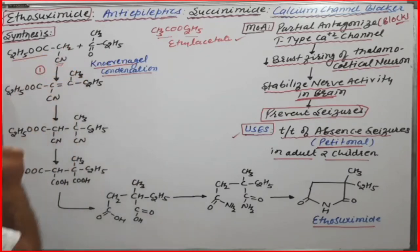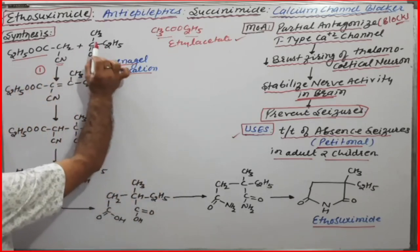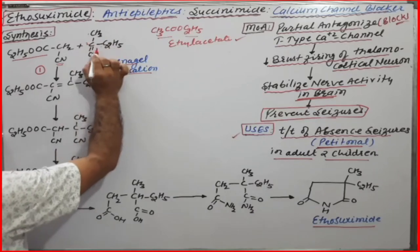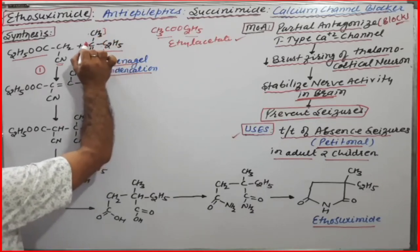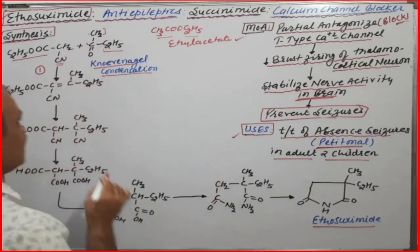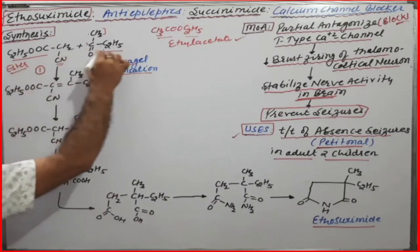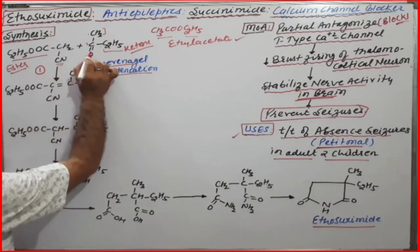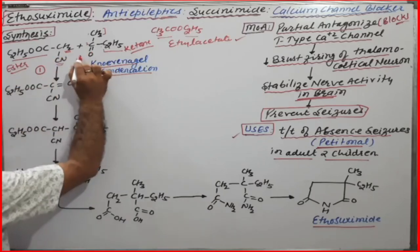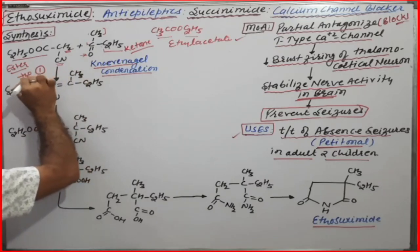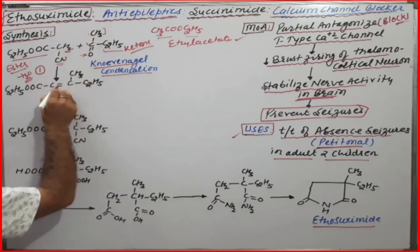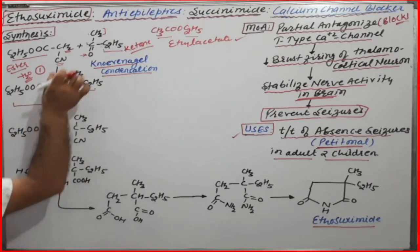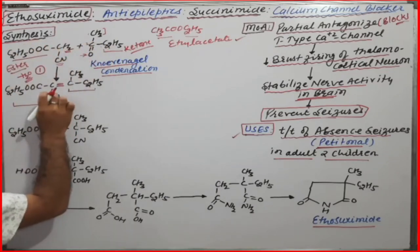The second reactant is methyl ethyl ketone. The ester (cyanoethyl acetate) and the ketone (methyl ethyl ketone) undergo Knoevenagel condensation. A hydrogen and oxygen are removed as a water molecule, and both the ester and ketone condense to form a double bond between the ketone moiety and the ester moiety.